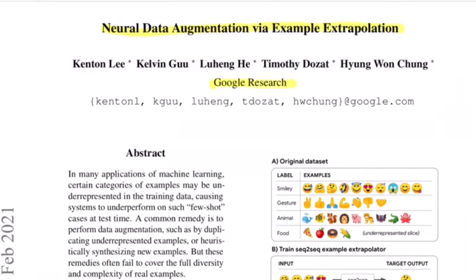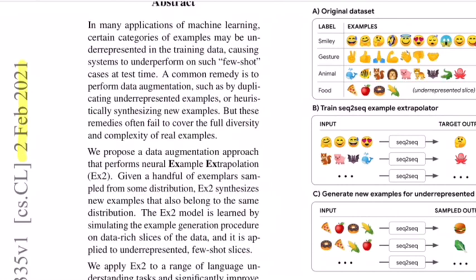This is from Google Research and it came out this year in February. So let's start with the abstract. The paper proposes a data augmentation approach that uses neural networks to do example extrapolation. If you only have certain handful of examples for any distribution or class, which is very common in real world scenarios.